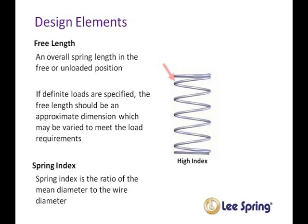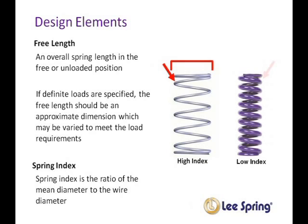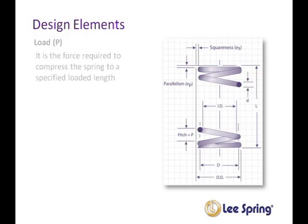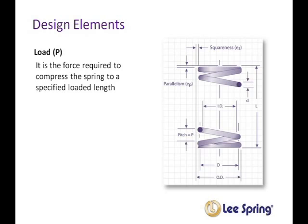A high index spring would have a smaller wire diameter and a higher spring diameter, similar to a light pressure spring. A low index spring would have a larger wire diameter and a lower spring diameter, similar to a hefty spring. Load is the force required to compress the spring to a specific height. Load differs from spring rate in that spring rate is the amount of force to move the spring in increments, where load is the amount of force to move the spring to a specific height.